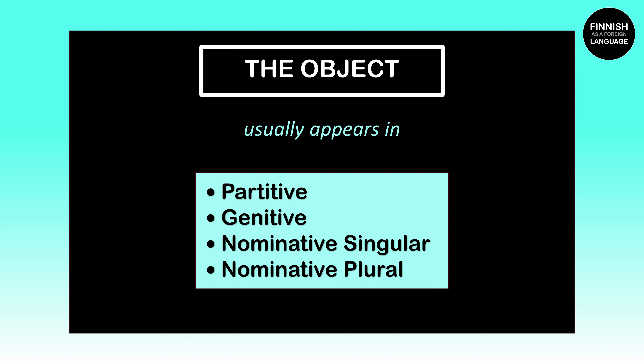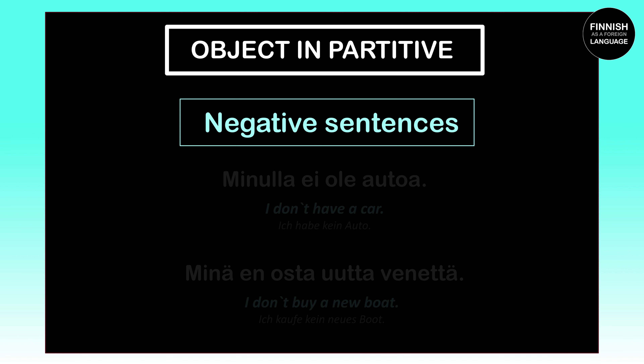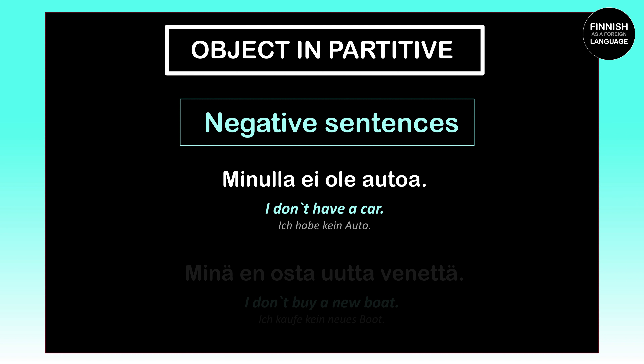Let's start figuring out when our object has to stand in the partitive case. When we have a negative sentence, we have to put our object into the partitive case. Here's one example: 'Minulla ei ole autoa' means 'I don't have a car.' Our object here is the car, which is 'auto' in Finnish. Because this sentence is a negative one, we have to put the car into the partitive case, which is why 'auto' becomes 'autoa.'